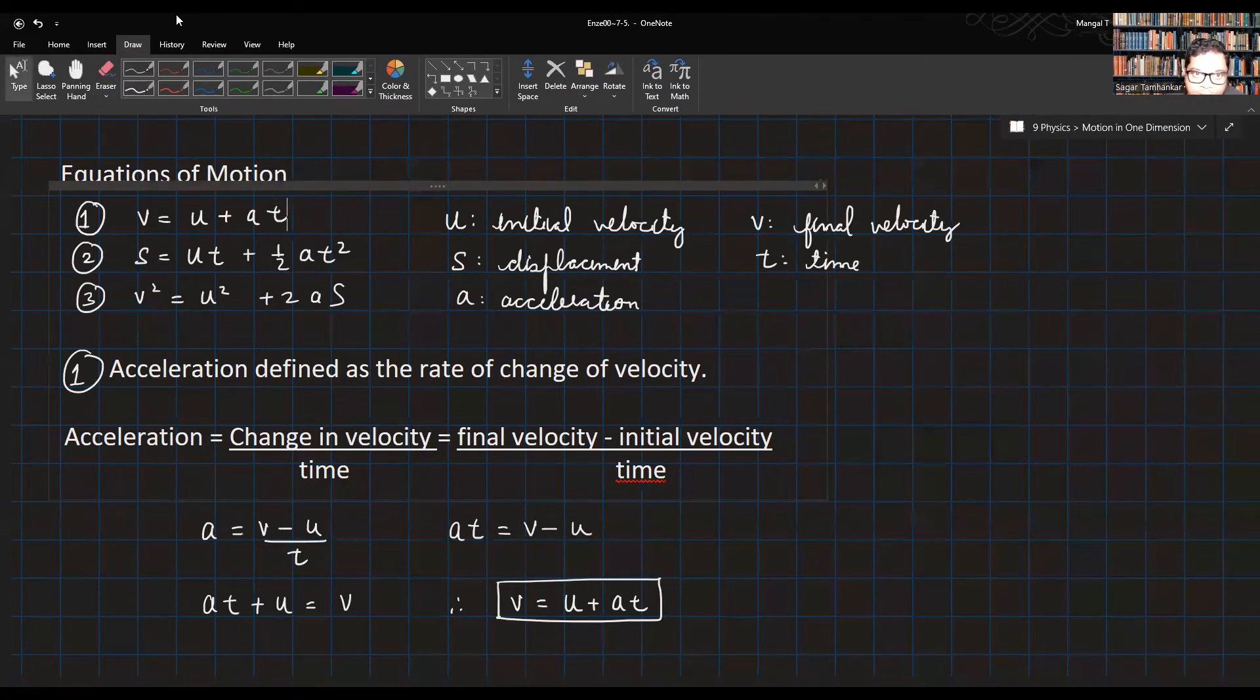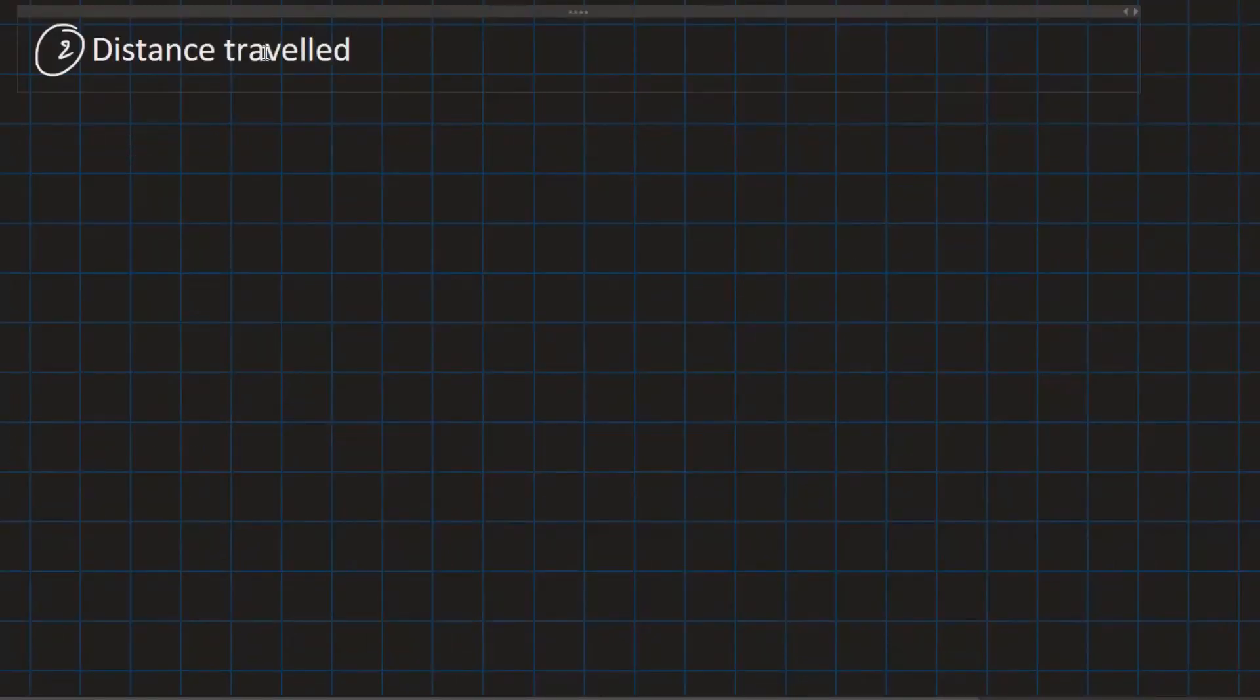Now we move to the second one. Now distance traveled is equal to average velocity into time.